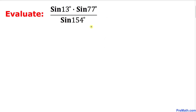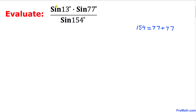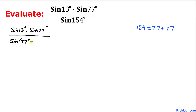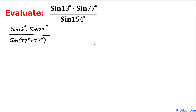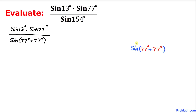Let's go ahead and get started with the solution. The first thing we are going to do is focus on the denominator: 154 degrees. We can write 154 as 77 plus 77. So our problem becomes sine of 13 degrees times sine of 77 degrees divided by sine of 77 plus 77 degrees.